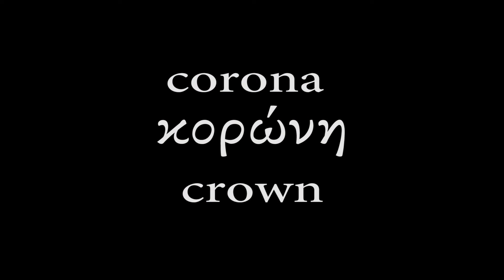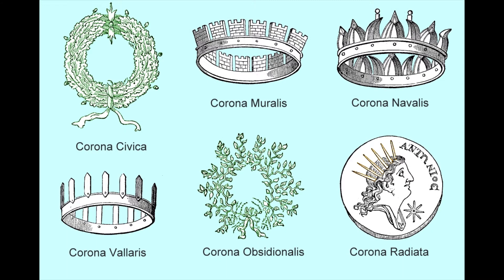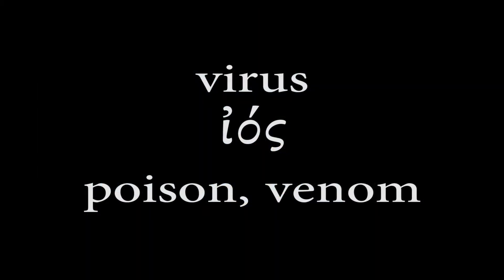Coronavirus actually just comes from two separate Latin words that aren't even changed from Latin. First: corona. The Latin word corona actually comes from a Greek word, coronae — they both mean crown. In Roman and Greek times, a crown was also like a garland or a wreath; anyone who won a sporting event would get a kind of corona to wear on their head. The second part of that word, virus, is just the Latin word for poison or venom — it also comes from a Greek word, ios, also meaning poison or venom.